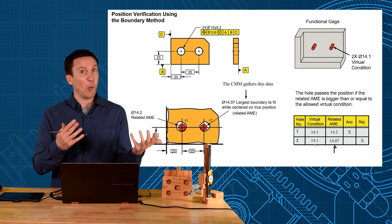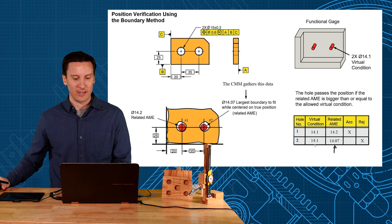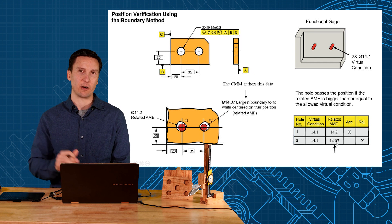So now we know more than pass or fail, we know which hole is bad, which one is good and how bad it is. It's actually just out just a little bit, just outside of its tolerance zone.